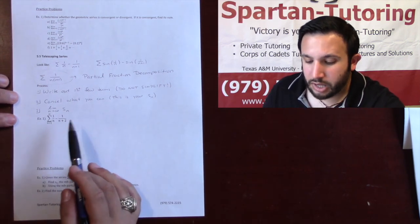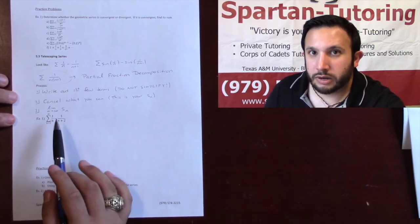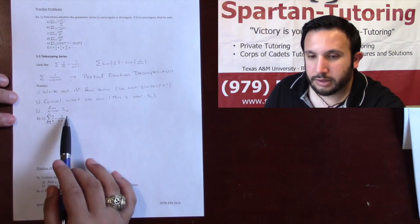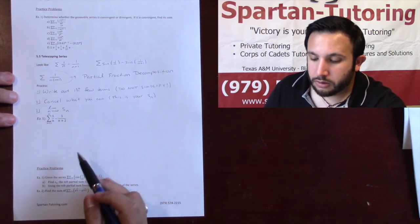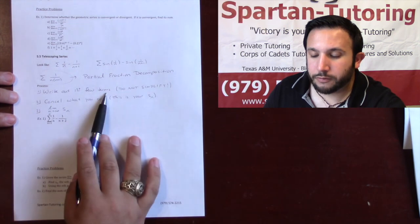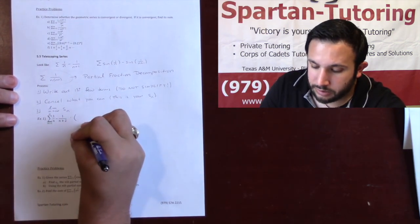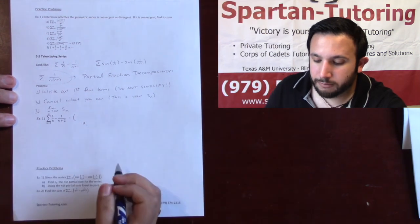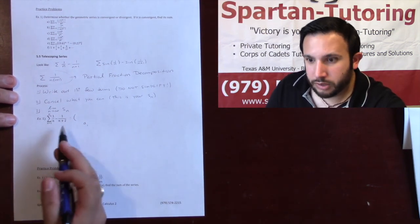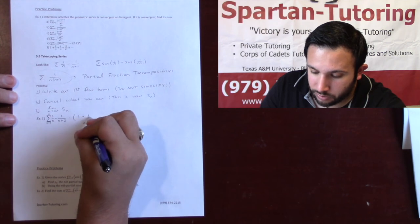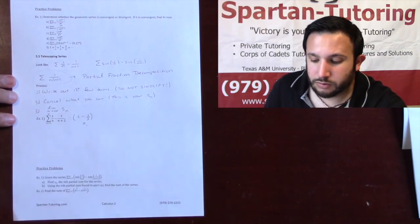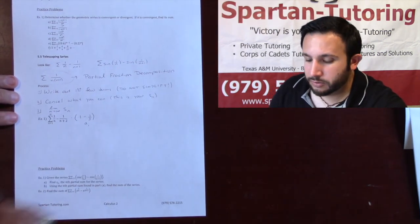Okay, so let's run through an example. Say I want to find the sum from 1 to infinity of 1 over n minus 1 over n plus 2. The first thing I'm going to do is write out the first few terms but I'm not going to simplify. What I mean by that is I'm going to start off by writing a_1. a_1 is what I get when I plug 1 into n, so it's going to be 1 minus 1/3, and I'm going to leave it as 1 minus 1/3. That's what I mean by don't simplify.